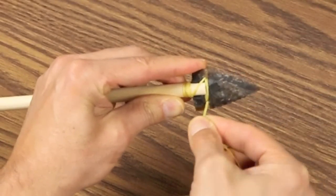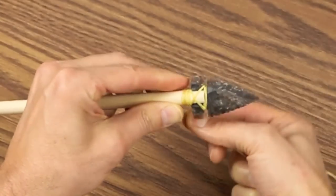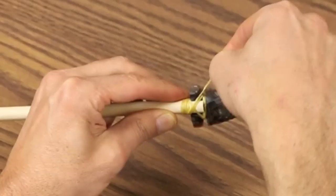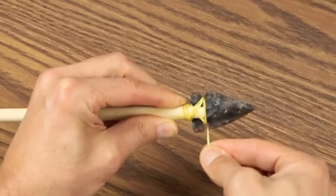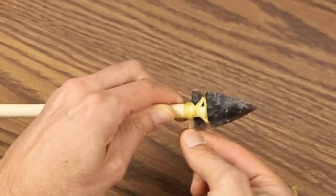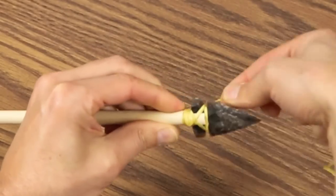This time you're going to go from the back through the two notches, do that twice, speed up a little bit here, rotate, do it once, rotate again, do it once.